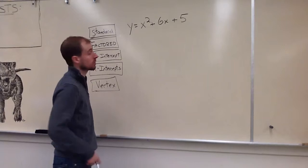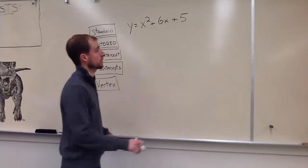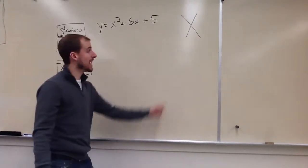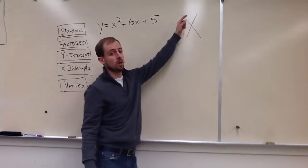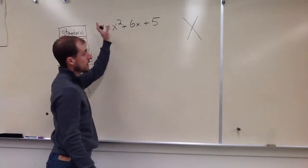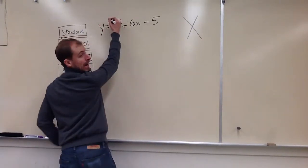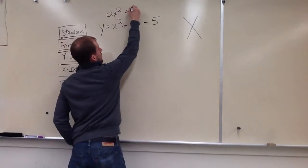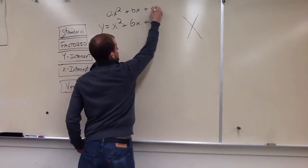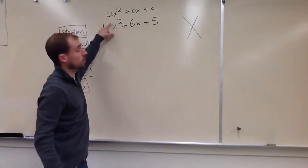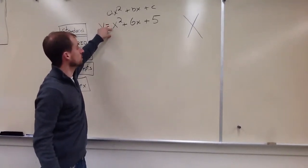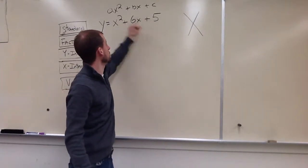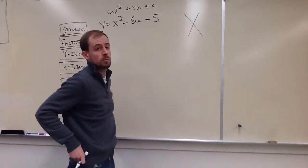So I'm going to factor this quadratic. I draw my diamond. Up top in this diamond always goes the a times the c. So if you forgot, I'll write the standard form like this. So we've got a is the number out front, it should be 1. b is 6, c is 5. So a times c in this case will be 5.